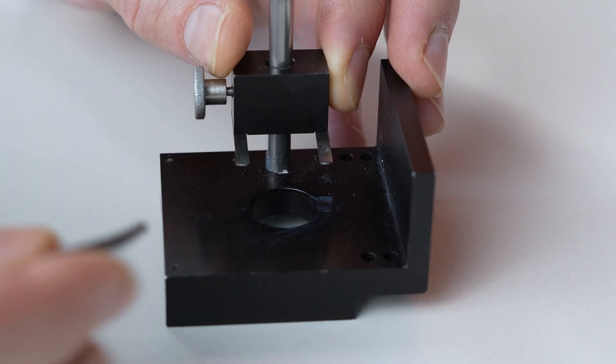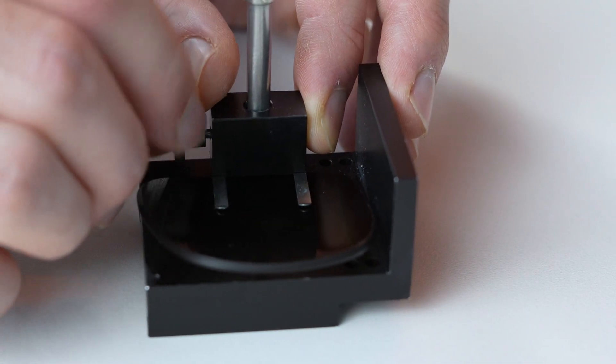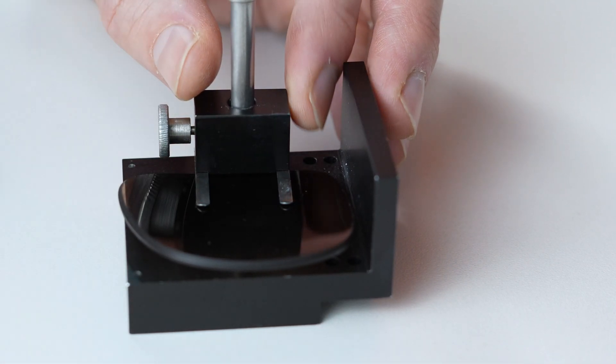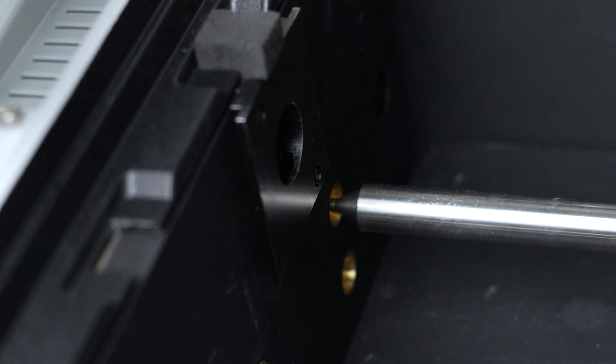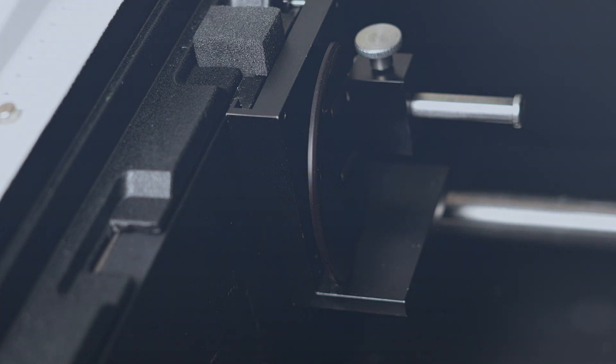First, I open my sample holder. I slide the glass in. I close it. And I can tighten the screw on the side really well, to make sure that the glass doesn't fall off during the measurement. Now I can place my sample holder in the spectrometer, in the right position. And we can start the measurement.